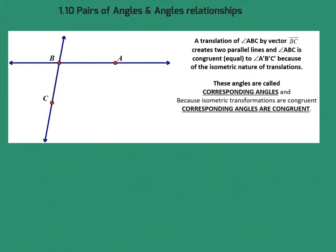These angle relationships that we will talk about now are gigantic — they get used in all kinds of problems, not just right now but in many places, so pay close attention. This shows a translation of angle ABC by vector BC, which is right here.